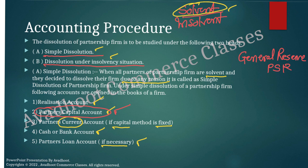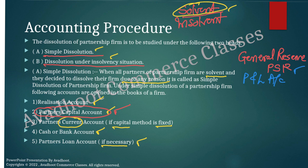If a P&L account is given on the liability side, that is profit — transfer it to the partner's capital account credit side in their PSR. If the P&L account lies on the asset side, that is losses — transfer those losses to the partner's capital account debit side in PSR. Then transfer the cash or bank balance to the cash or bank account. If both balances are given, open the bank account and transfer cash to bank, as all transactions are assumed through the bank.